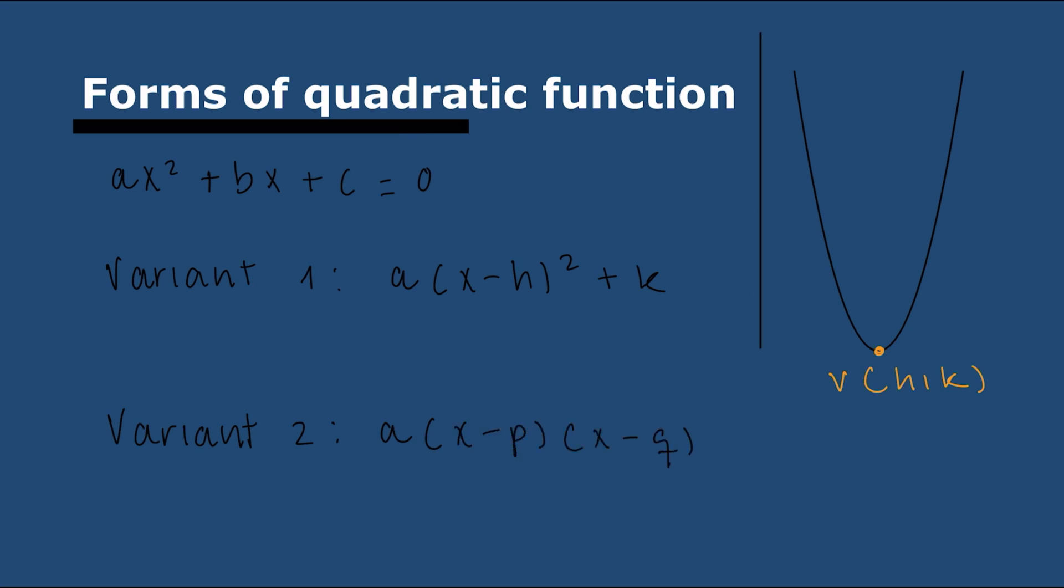And the second variant is a(x - p)(x - q). And in this case, p and q are also very important. They are the roots. They are the x-coordinates.